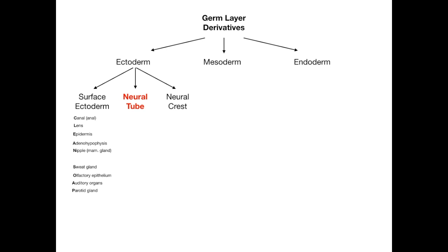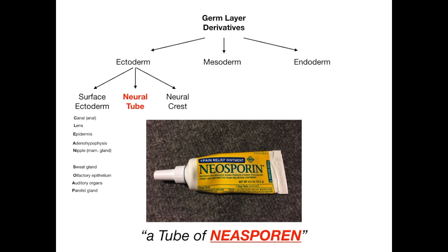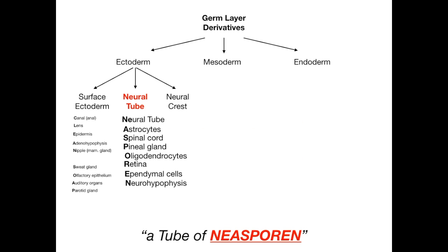Just like before, we focused on the word 'surface' — for neural tube, focus on the word 'tube.' I always think of a tube of Neosporin, which is an antibacterial ointment. We'll change the spelling slightly to 'NEASPOREN' (N-E-A-S-P-O-R-E-N), and those letters tell us what comes from the neural tube: Neural tube itself, Astrocytes, Spinal cord, Pineal gland, Oligodendrocytes, Retina, Ependymal cells, and Neurohypophysis — all come from the neural tube. Remember it as a tube of Neosporin ointment.